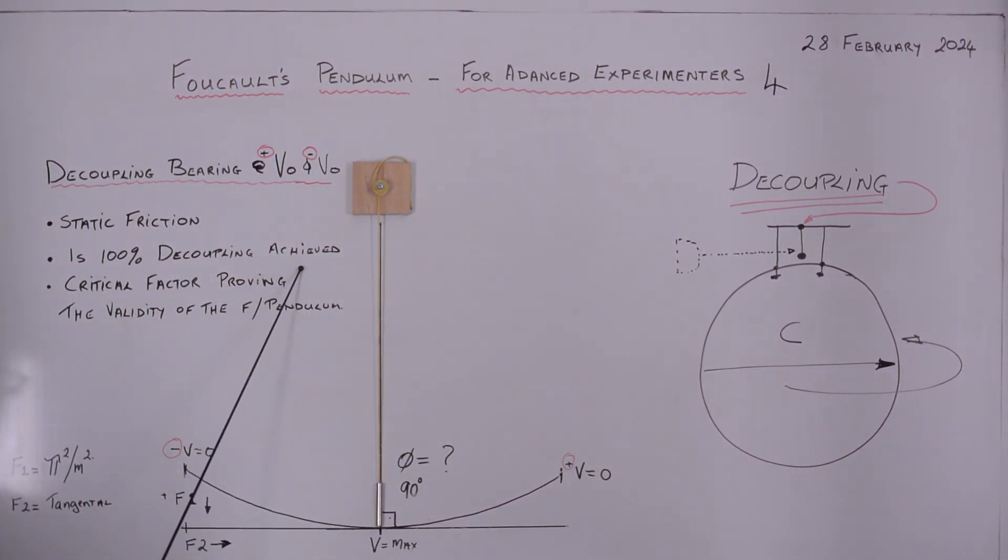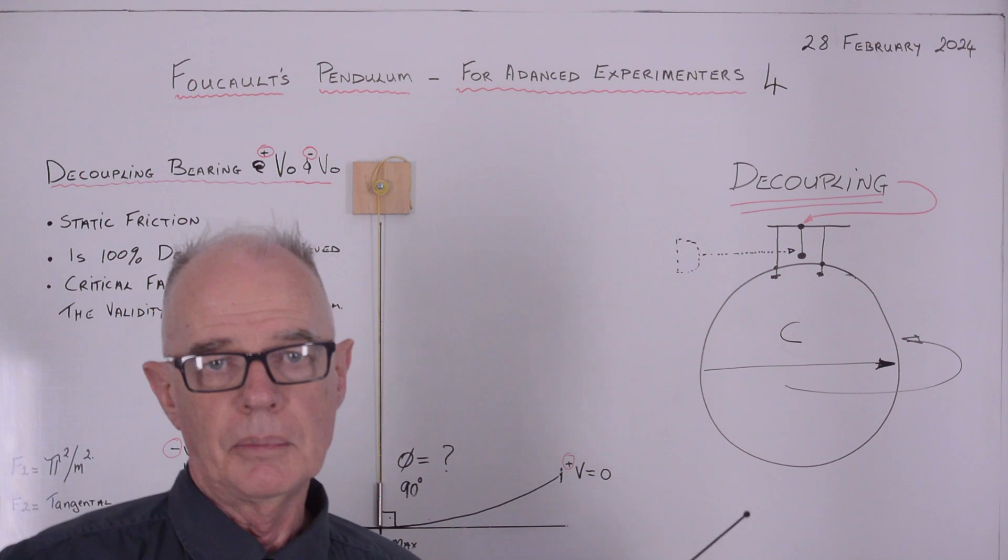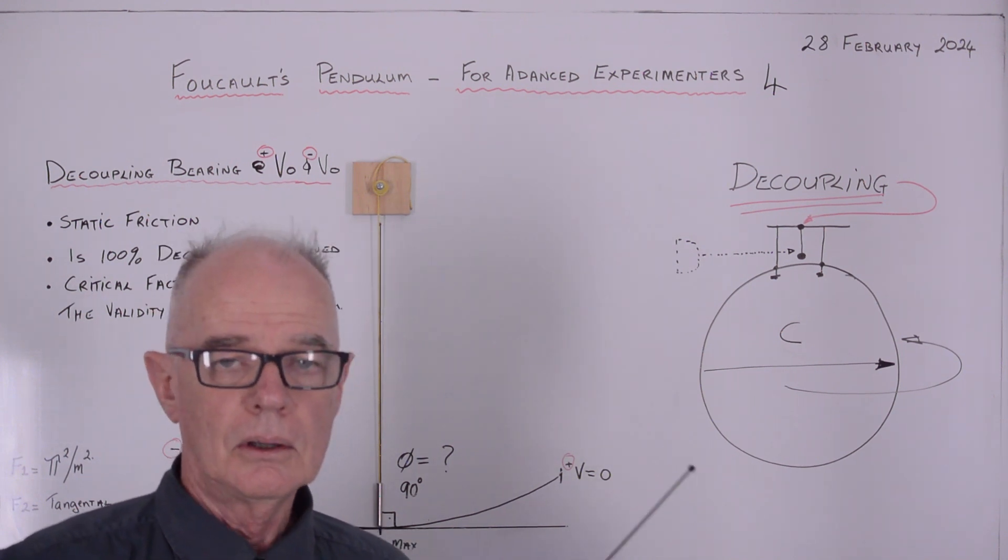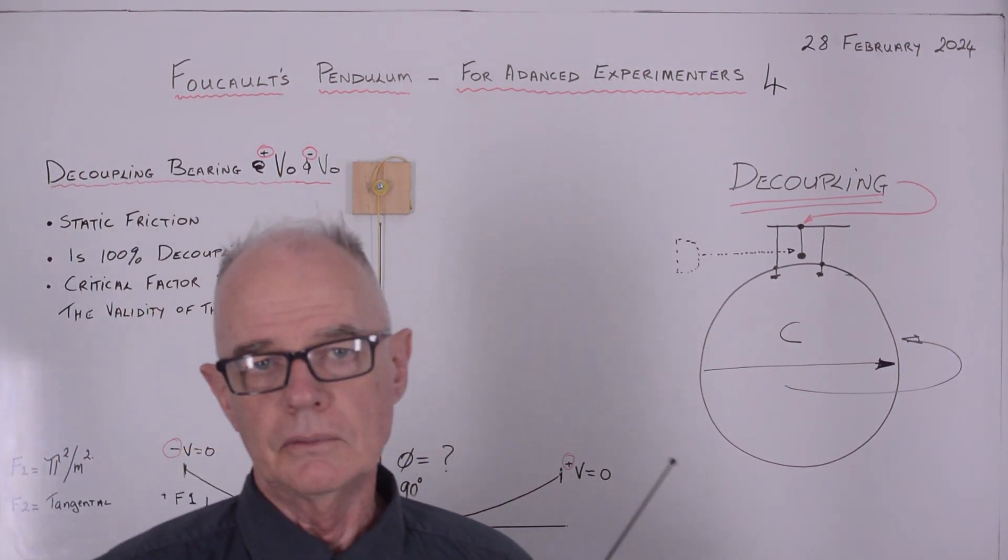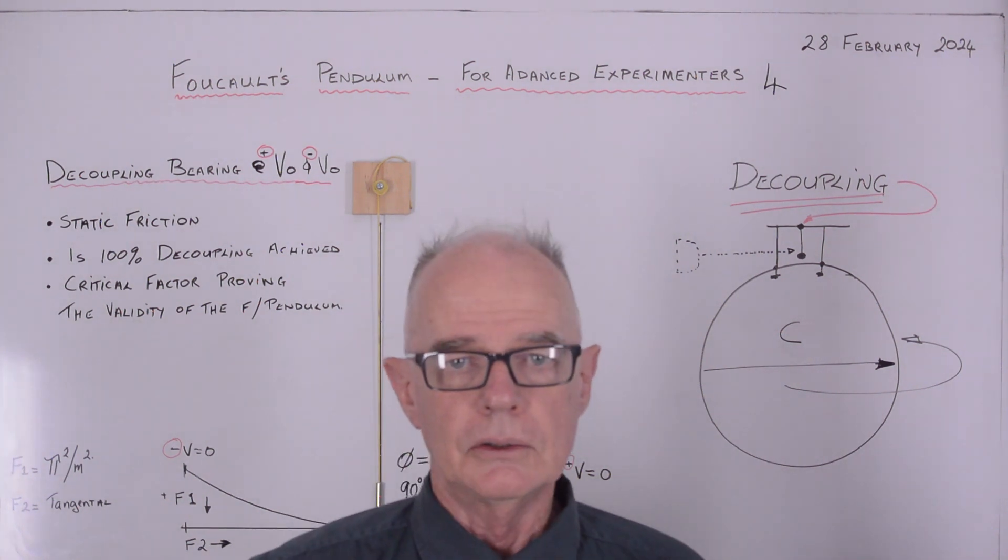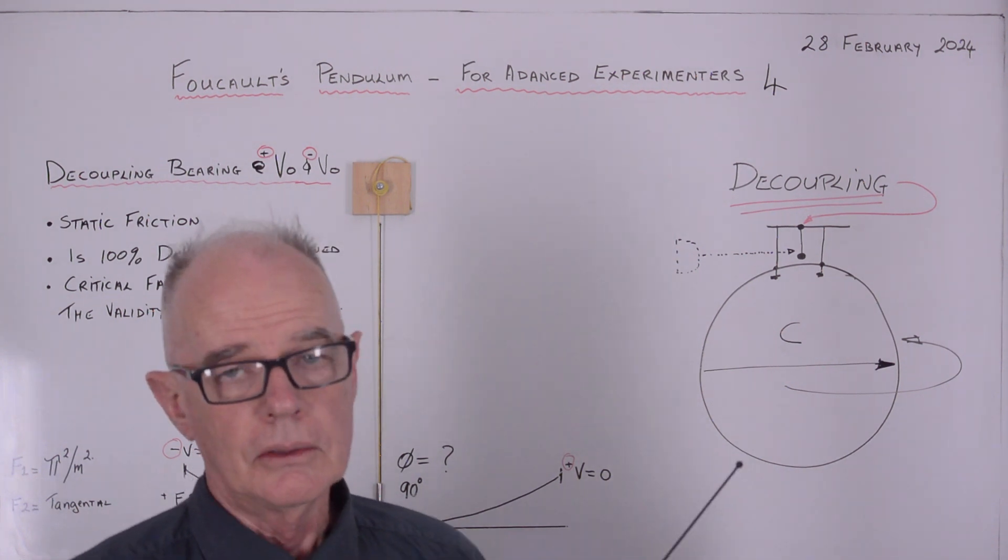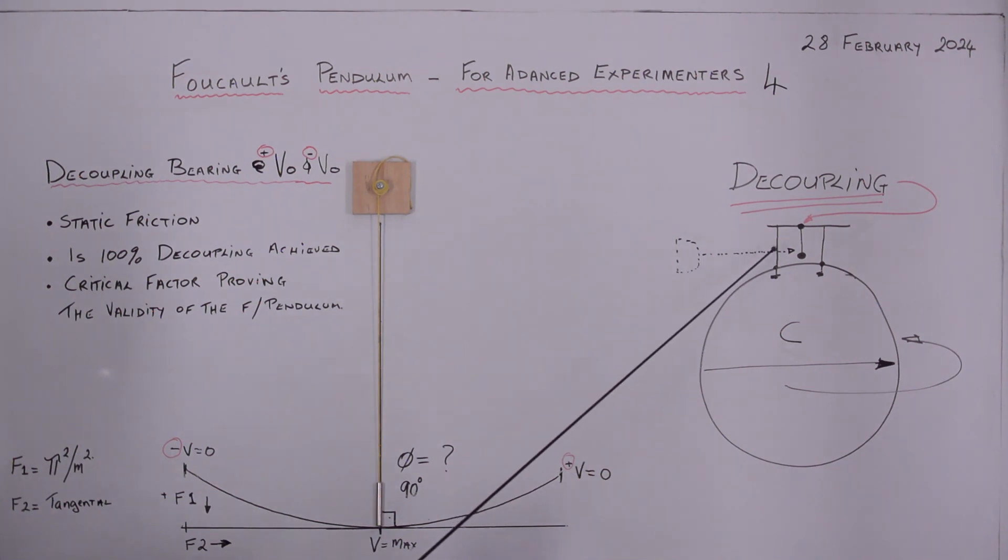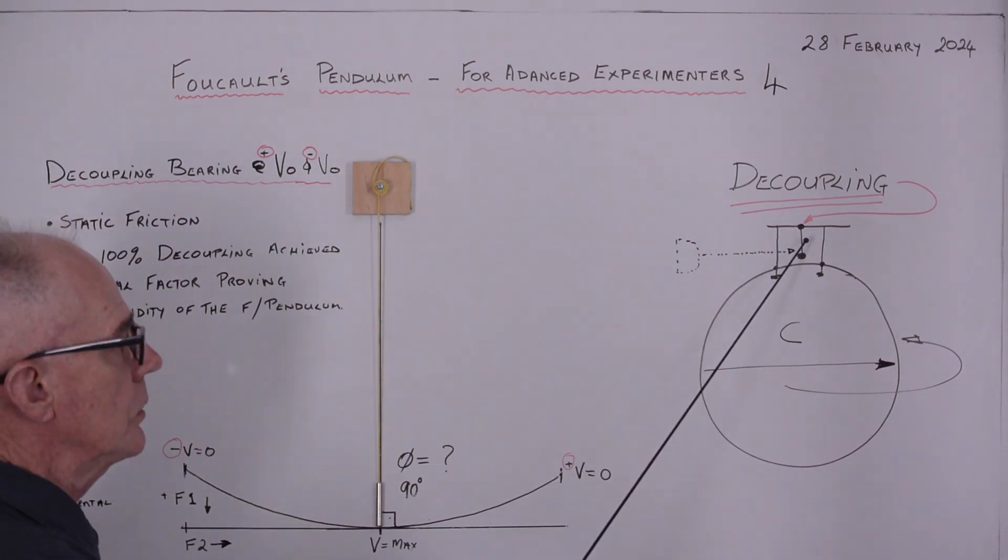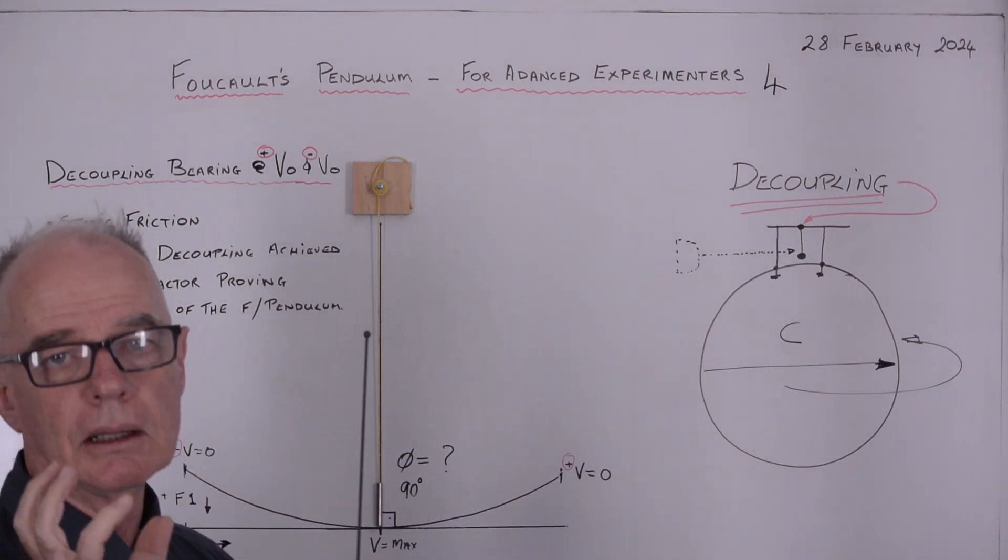It's taken us probably three videos to get here because it's very important. Because if it's not 100% decoupling, if we haven't achieved 100% decoupling, then the validity of the pendulum's in question. So basically have we been conned or is this pendulum an incredible device that's actually proving the earth spinning?